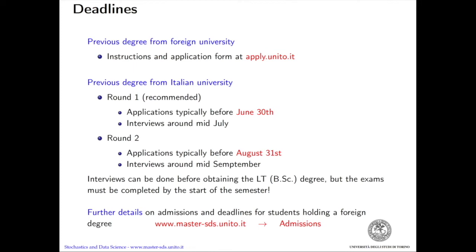For students who obtained the previous degree in an Italian university, there are two rounds for applying. The first is recommended, although the two rounds give the same chances of admission. The deadline for the first is typically around June 30th, and interviews are held around mid-July. The deadline for the second is typically at the end of August, and the interviews are held around mid-September.